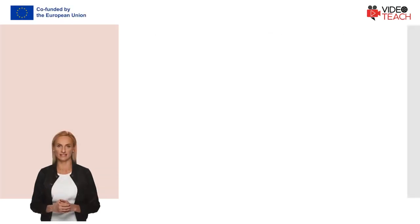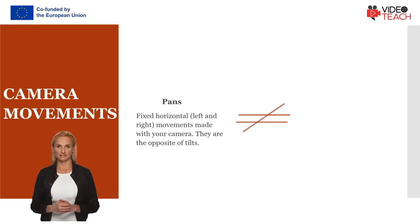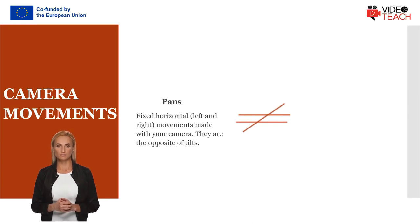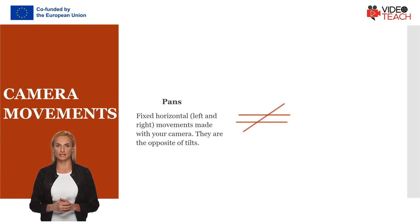In video making, panning means swiveling — moving a video camera horizontally from a fixed position. Therefore, pans are fixed horizontal, left and right, movements made with your camera. The motion is similar to the motion of a person when they turn their head on their neck from left to right.